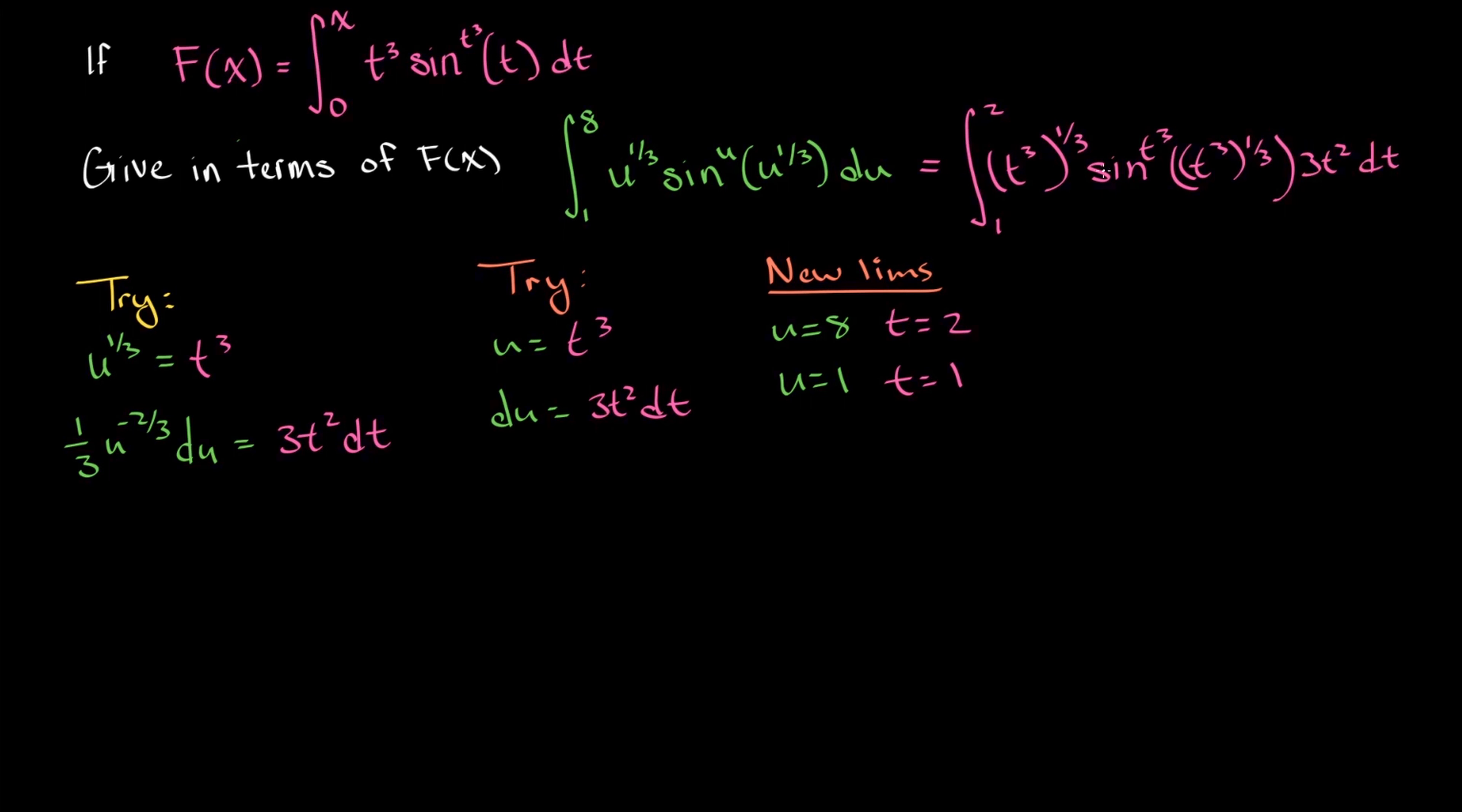Now we're going to see, does this change of variables allow us to express in terms of capital F of x when we evaluate it? Simplifying this, t cubed to the 1 third power, that's just going to be t, and then we have a 3t squared left over. So we're going to have 3t cubed, and then our sine function becomes sine of t to the t cubed power, and then dt.